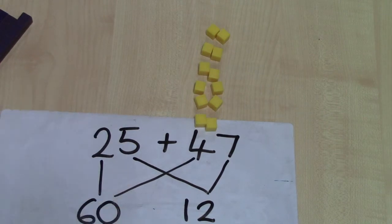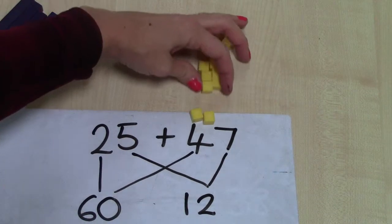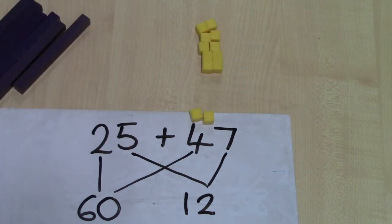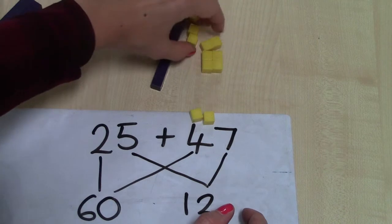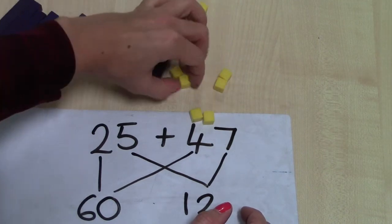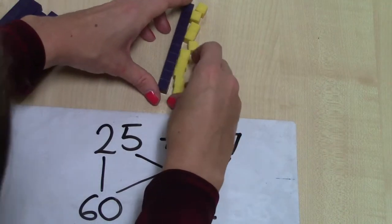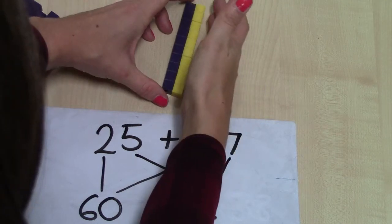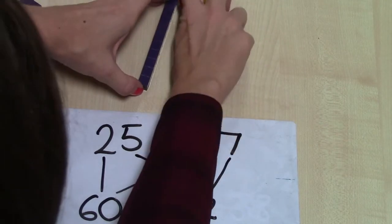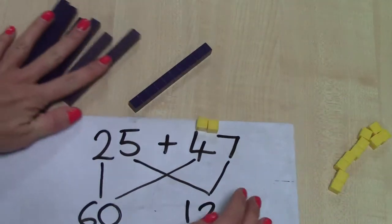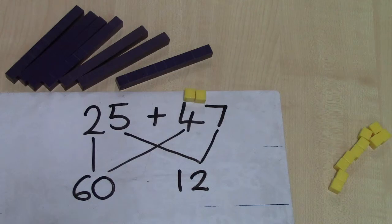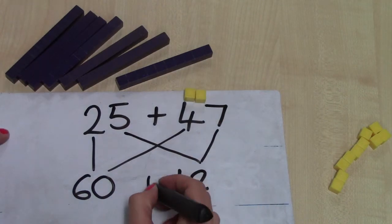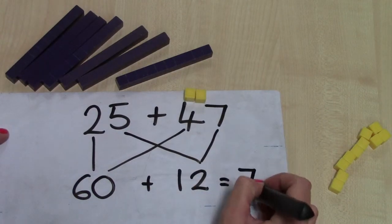Now we could exchange 10 of our units for another bar of ten, one of our sticks of ten. We can just check that they are the same by lining them up against each other. So I'm going to exchange those. So actually now what I've got is seven tens and two units. So 60 add 12 is 72.